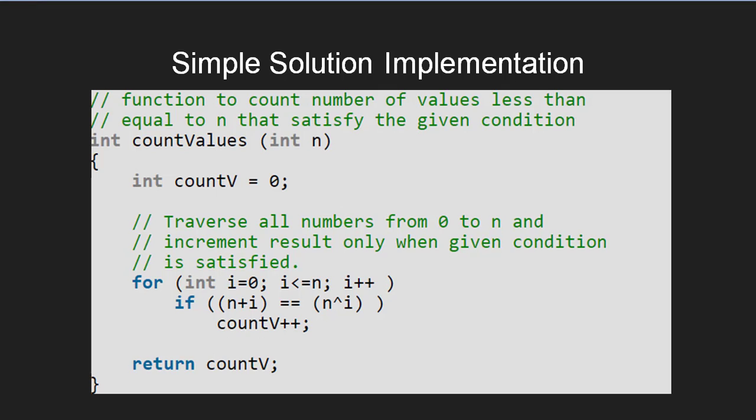Here we have a function named count values which returns the number of integers satisfying the equal sum and XOR property. We first initialize the counter count v with 0. Now we iterate in value of i from 0 to n and whenever we find the satisfying value, we increment the counter count v and at last we return the same.